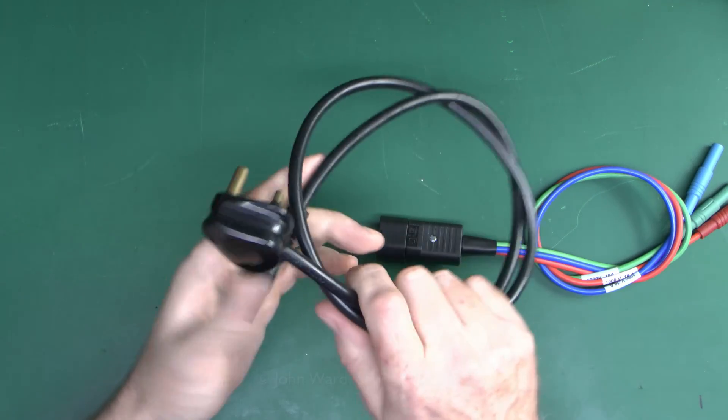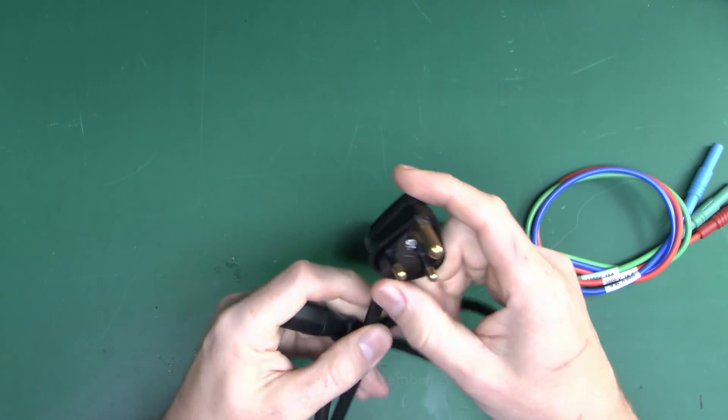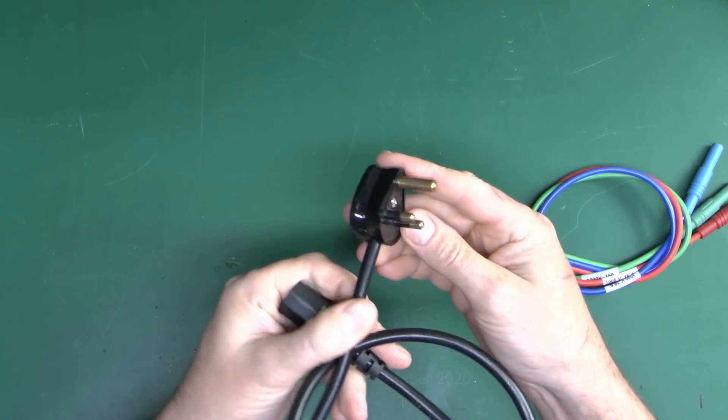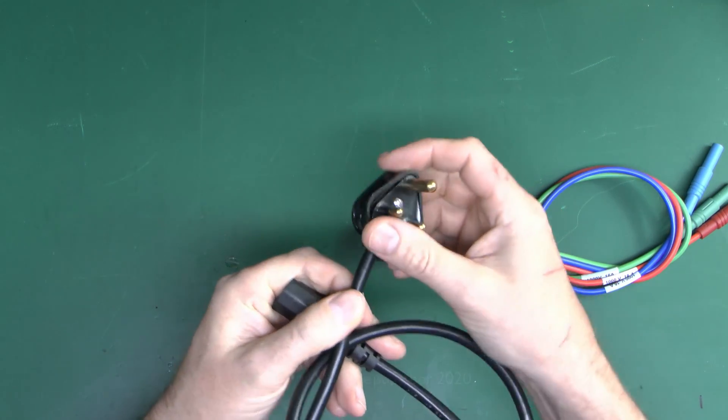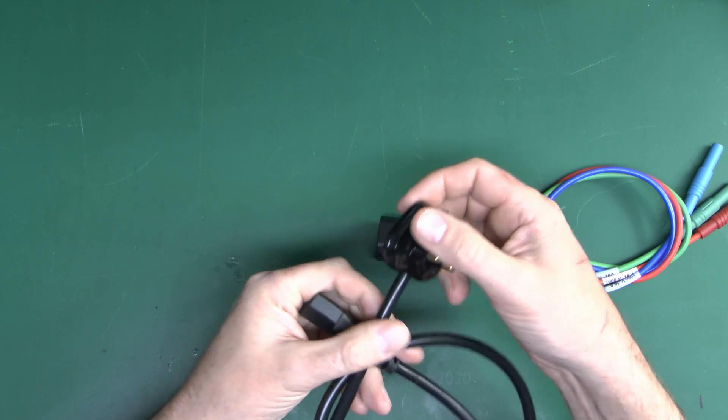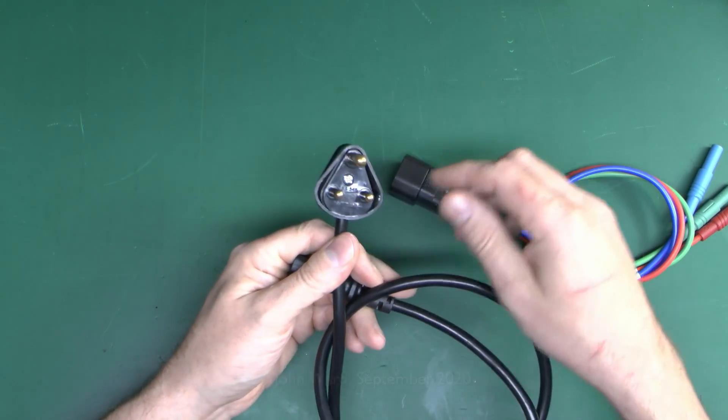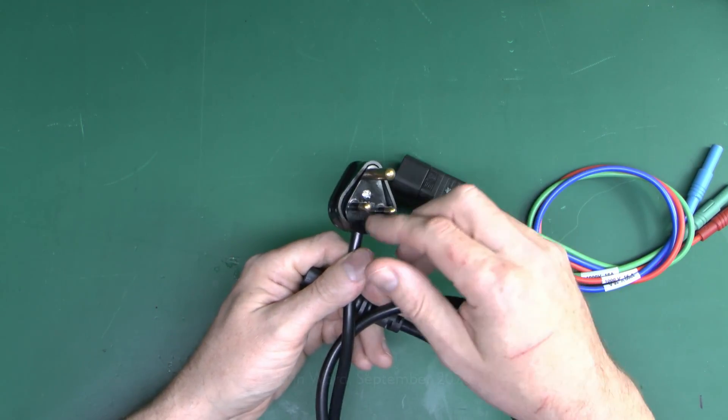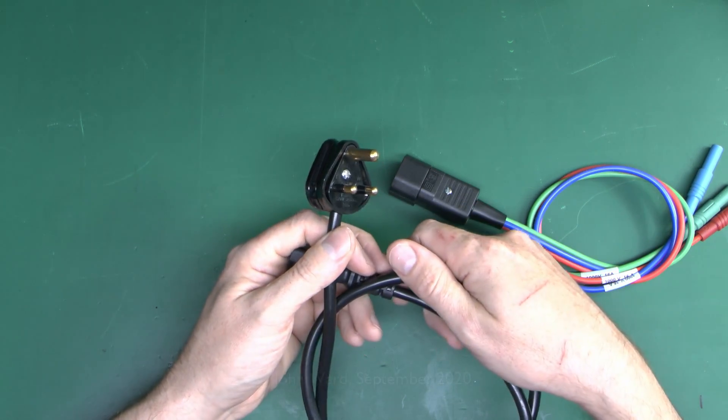Other things you might come across are things like this. Now this is a round pin plug, and these used to be used in the UK for pretty much everything, but nowadays they're normally just used for things like lighting, particularly where you have lights inside a hotel room or something similar. And the lamps plug in with these, and then you can switch them on and off from the switch on the wall.